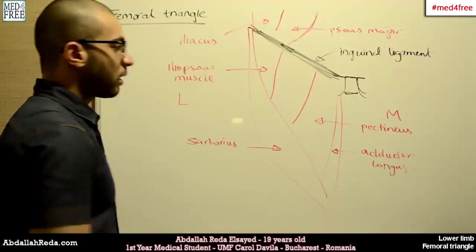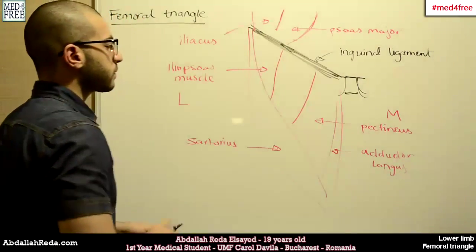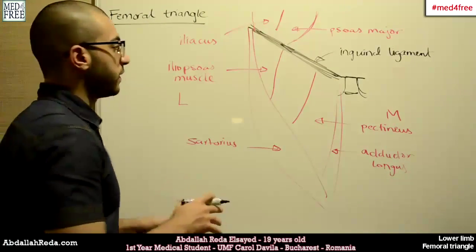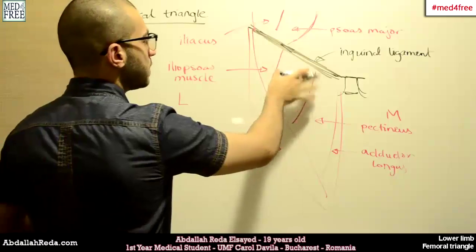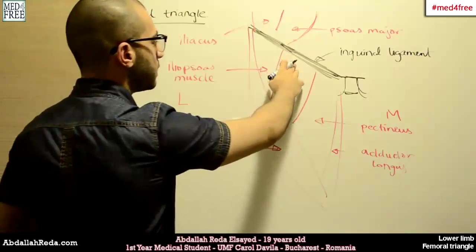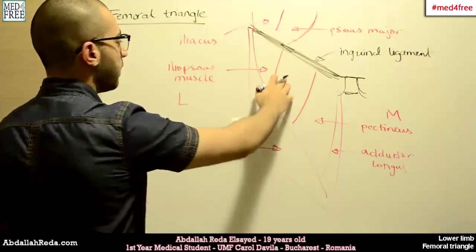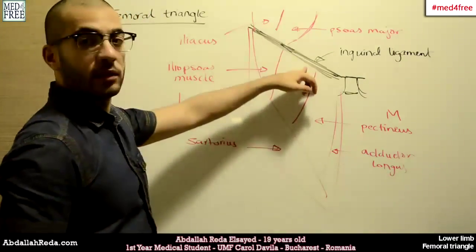Now, what are the elements of this Triangle? We have two types of elements. We have elements that are embedded under the inguinal ligament and above the floor, in between the floor and the inguinal ligament.